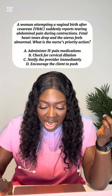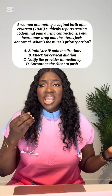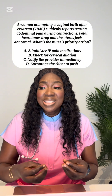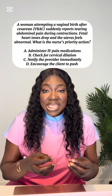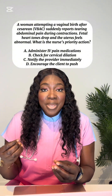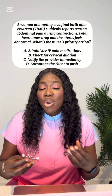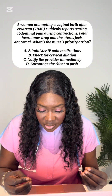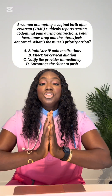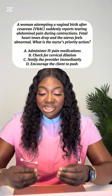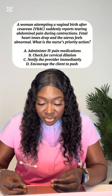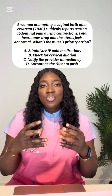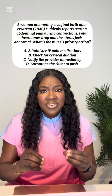Option A says administer IV pain medications — you might think she's in pain so give medication, but that is not treating the main issue. Giving pain medication will mask the pain but won't deal with the actual cause, which is uterine rupture. Option B, check for cervical dilation, is wasting time because the fetal heart rate is already down and the abdomen already looks abnormal.